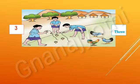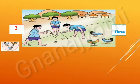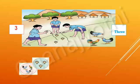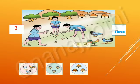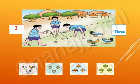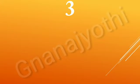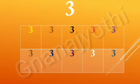Now, look at the number and read. In this picture, we have 3 hens, 3 tops, 3 houses, 3 trees, and also we can see 3 boys. So, 3 can be represented like this. It has no straight lines; it has only curved lines.